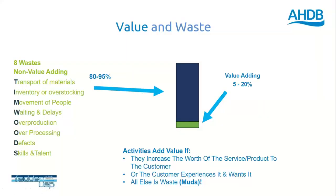The basics of lean is eliminating non-value-add within the operation. On the left you have TIMWOODS — the eight typical wastes found within operations. Transport involves moving materials around the farm or growing area and the time lost doing so. Inventory is where you have too much stock — whether of actual products or packing materials — which can cause problems, particularly in constrained pack house spaces.